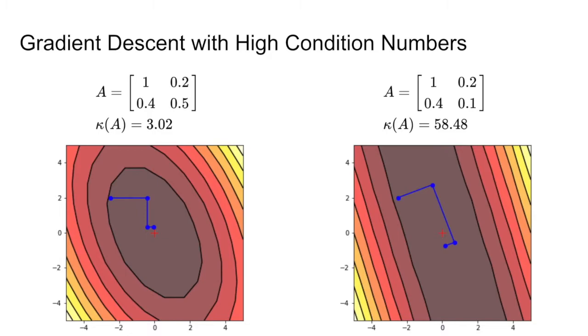We can see this in action with the example here. With the same starting point and number of steps, gradient descent is able to get much closer to the true optimum for the function, represented by the red cross, when the matrix A has a low condition number.